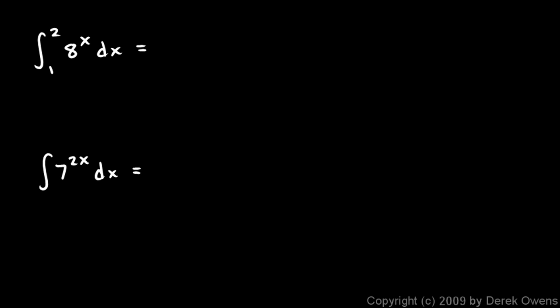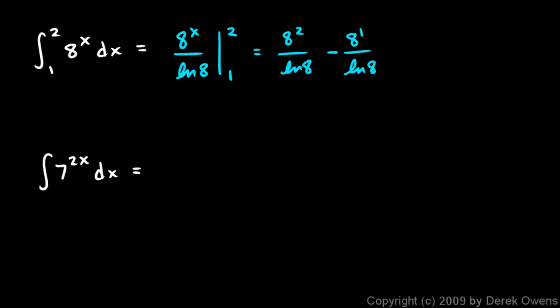A definite integral example: the integral of 8^x dx from 1 to 2. Integrating gives 8^x over ln(8), evaluated from 1 to 2. This equals 8² over ln(8) minus 8¹ over ln(8), which is 64 minus 8 equals 56, so the answer is 56 over ln(8). Computing on a calculator gives approximately 26.93.